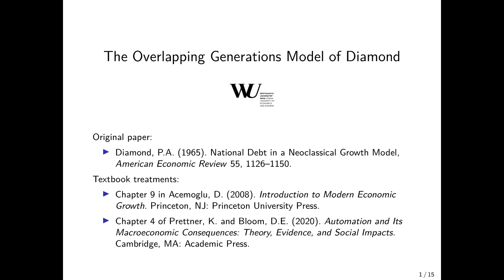Textbook treatments can be found in Chapter 9 of Acemoglu, 'Introduction to Modern Economic Growth,' and Chapter 4 of Bretton and Bloom, 'Automation and its Macroeconomic Consequences: Theory, Evidence and Social Impacts.'